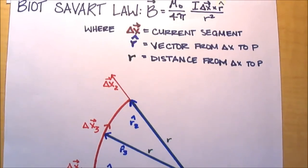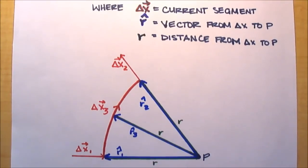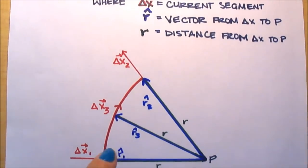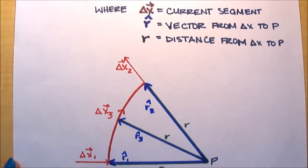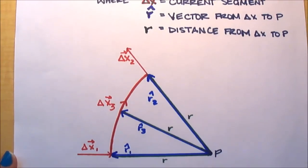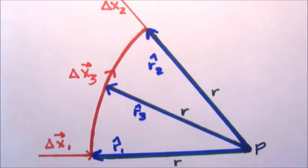And r, which is just the distance from Δx to P, which you can barely see, but it's in here in green.